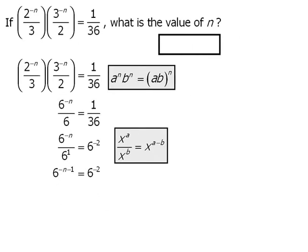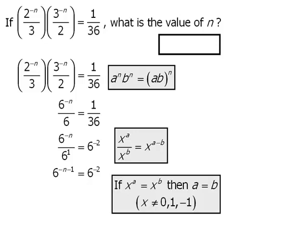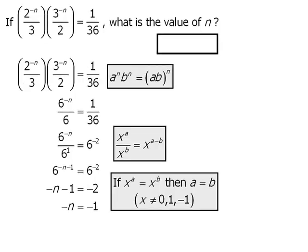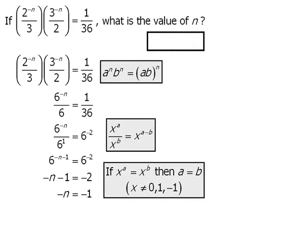At this point, since we have the same base on both sides of our equation, we can apply the following law that says the exponents must be equal. At this point, we can solve for n by first adding 1 to both sides of the equation, and then multiplying both sides by negative 1 to get n is equal to 1.